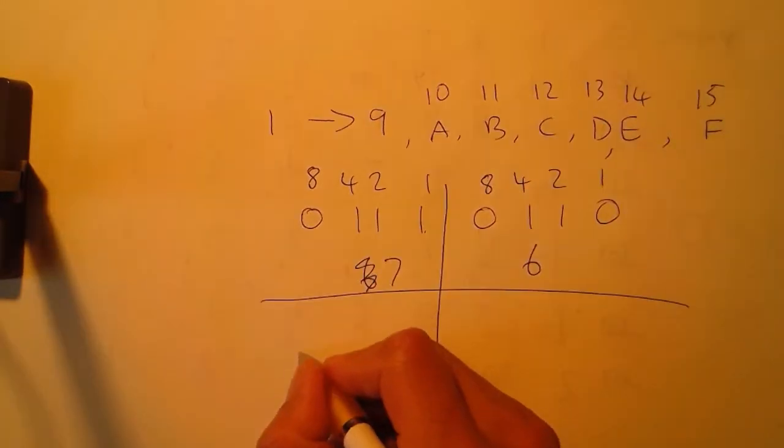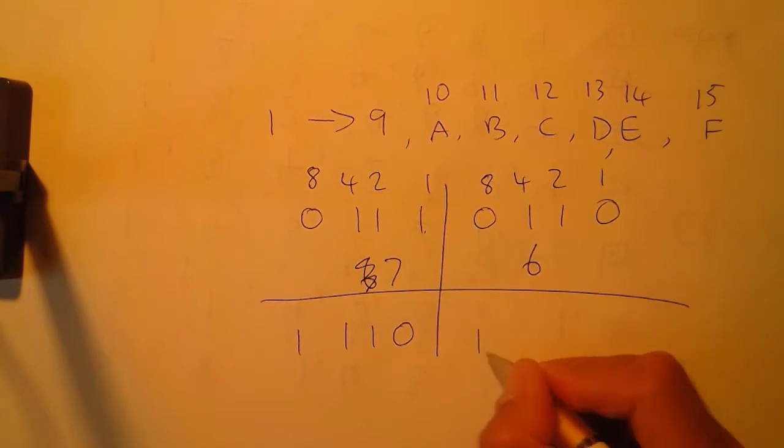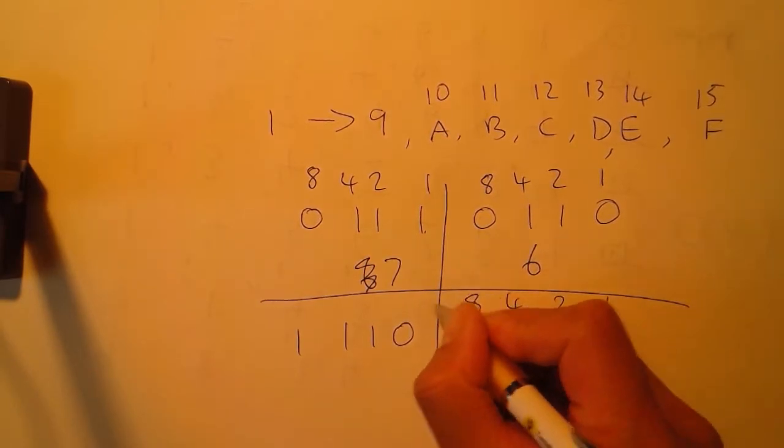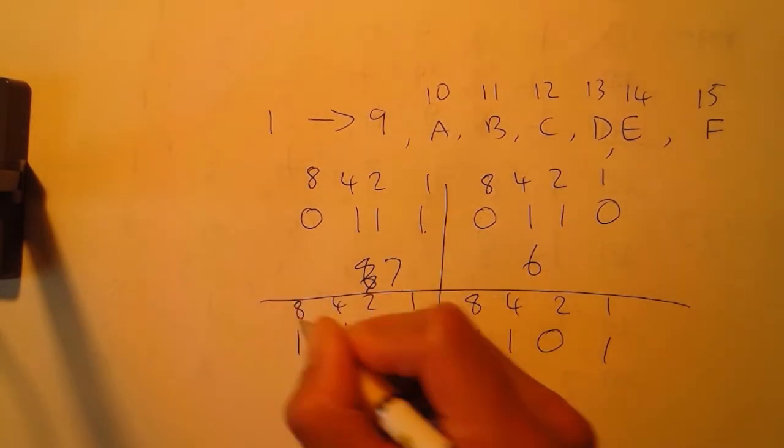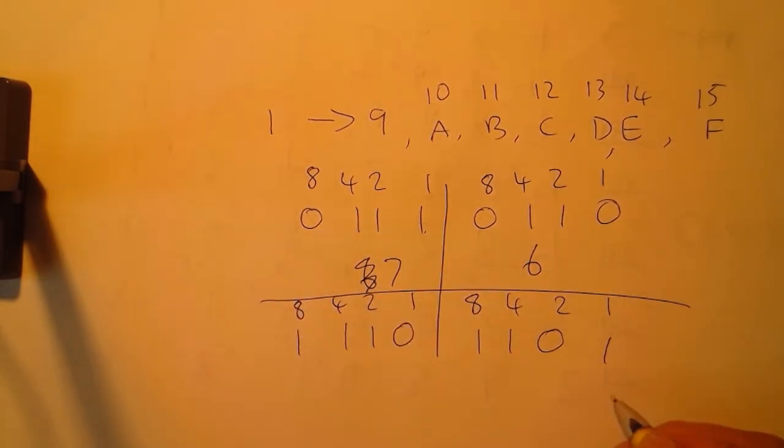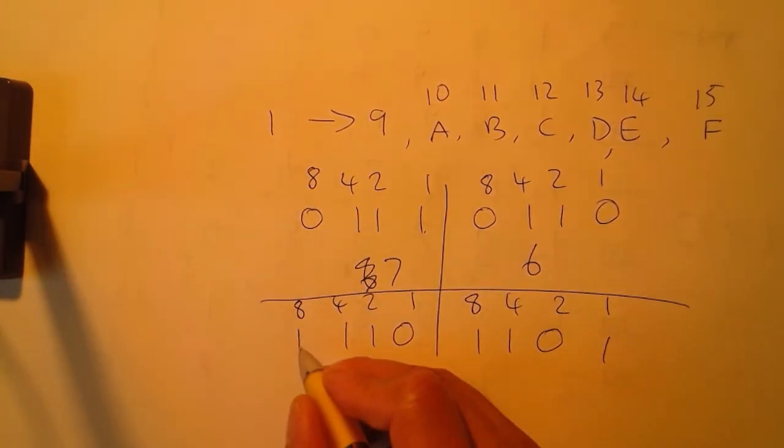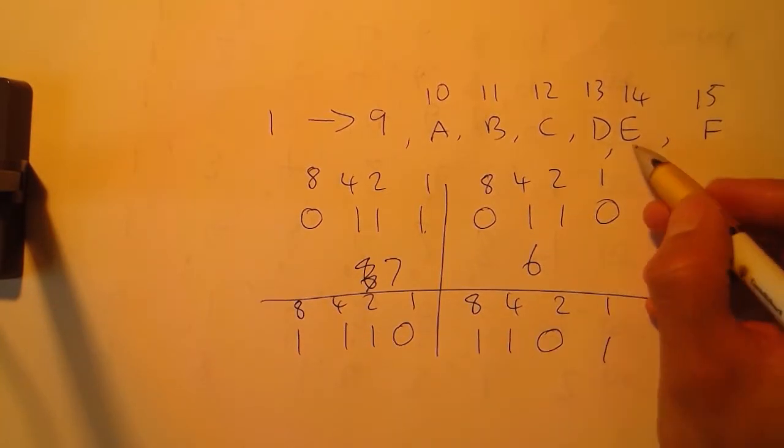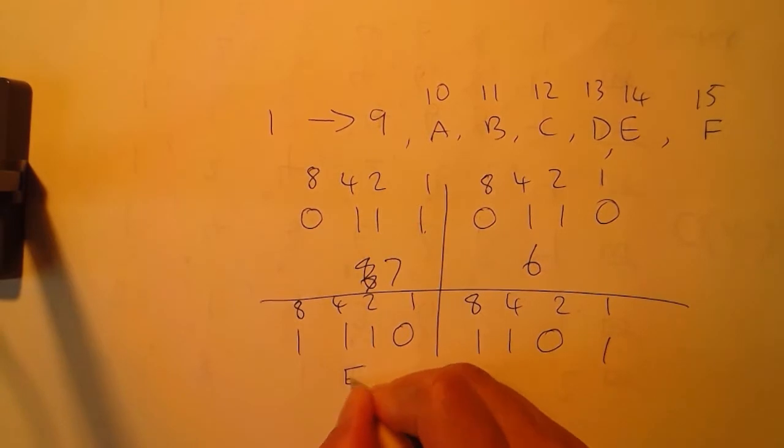Let's take another example: 11101101 in binary. Converting to hexadecimal, we've got eight plus four is twelve plus two is fourteen. Fourteen is represented by the letter E. And this value eight plus four plus one is thirteen, so that's represented by the letter D. So this value in binary is ED in hex.